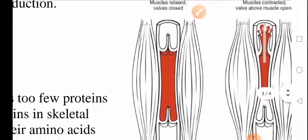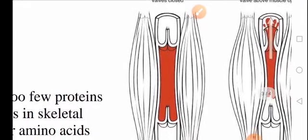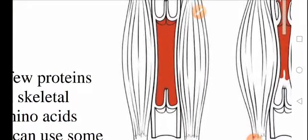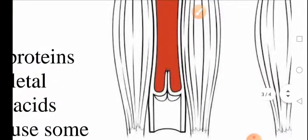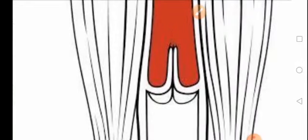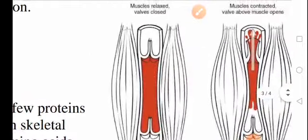Here, our skeletal muscles are relaxed. So these valves, as you see here, they are closed. How are they closed? Once the blood enters this chamber, these packs of the valves are filled with blood, causing the valves to be closed.